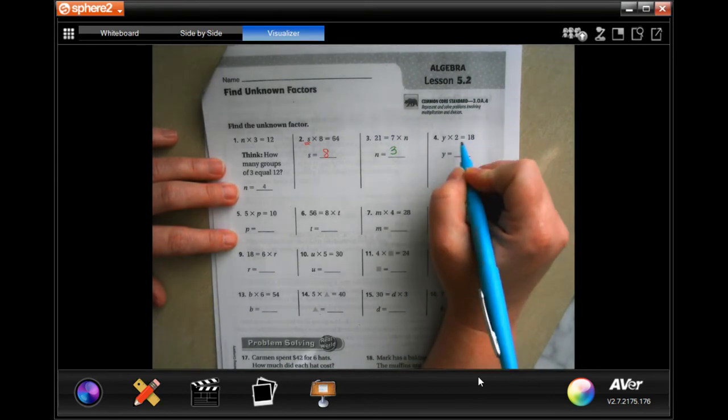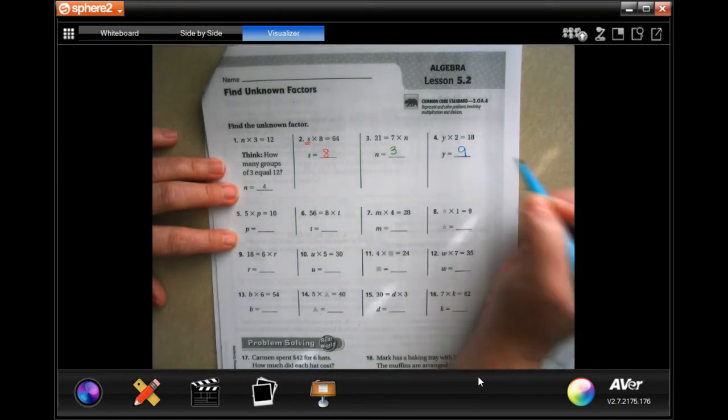What times 2 is 18? Well, 9 times 2 is 18.